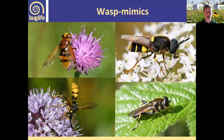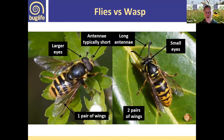Do be aware that lots of other insects mimic wasps — these are all flies. How do we tell a fly from a wasp? Exactly the same as with bees: flies have one pair of wings, wasps have two; antennae are long in the wasp or short in the fly; and eyes are large in the fly but small in the wasp.